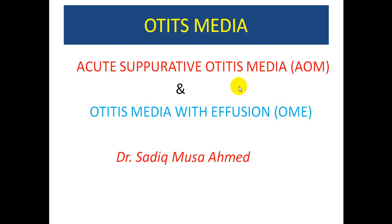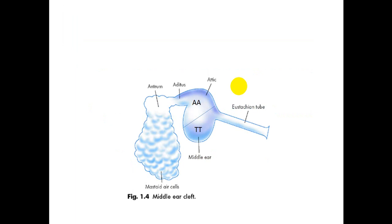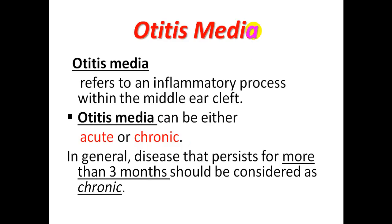Bismillah ar-rahman ar-rahim. This lecture is about acute suppurative otitis media and otitis media with effusion. The middle ear cleft consists of the Eustachian tube, tympanic cavity, attic, aditus ad antrum, mastoid antrum, and mastoid air cells. The inflammatory process within this middle ear cleft is called otitis media, which refers to an inflammatory process within the middle ear cleft.